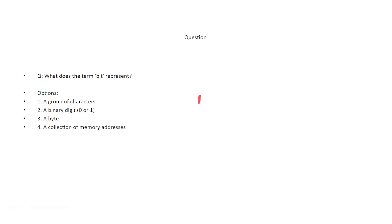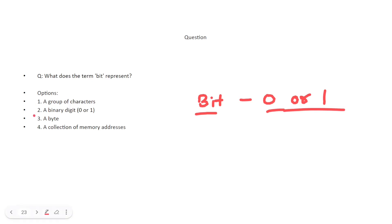What does the term 'bit' represent? The options are: a group of characters, a binary digit that is zero or one, a byte, and a collection of memory addresses. The correct answer is a binary digit — zero or one. A bit is the smallest unit of data in a computer, representing either zero or one.